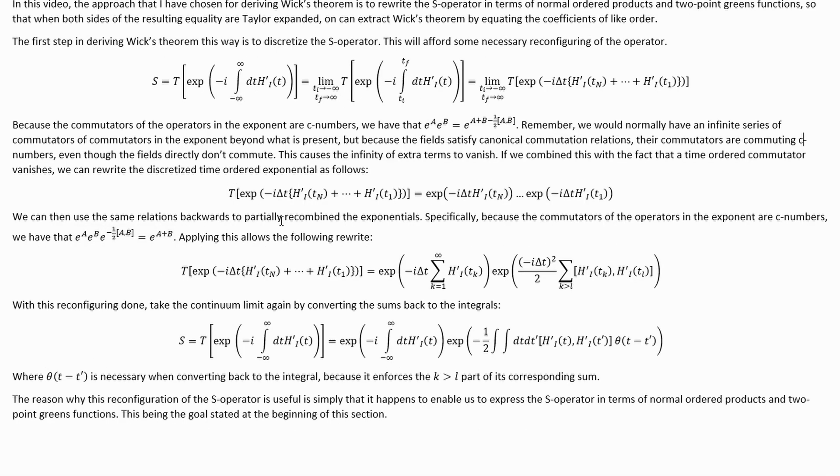We can then use the same relation backwards to partially recombine the exponentials. Specifically, because the commutators of operators in the exponent are C numbers, we have this relationship, this backwards one. Applying this allows us to rewrite it like this.